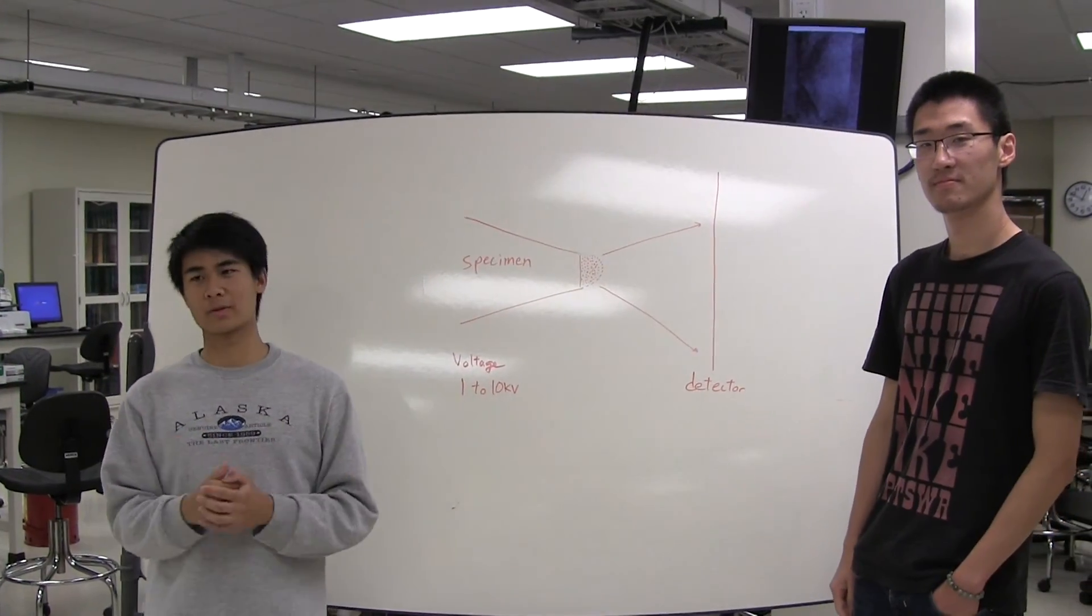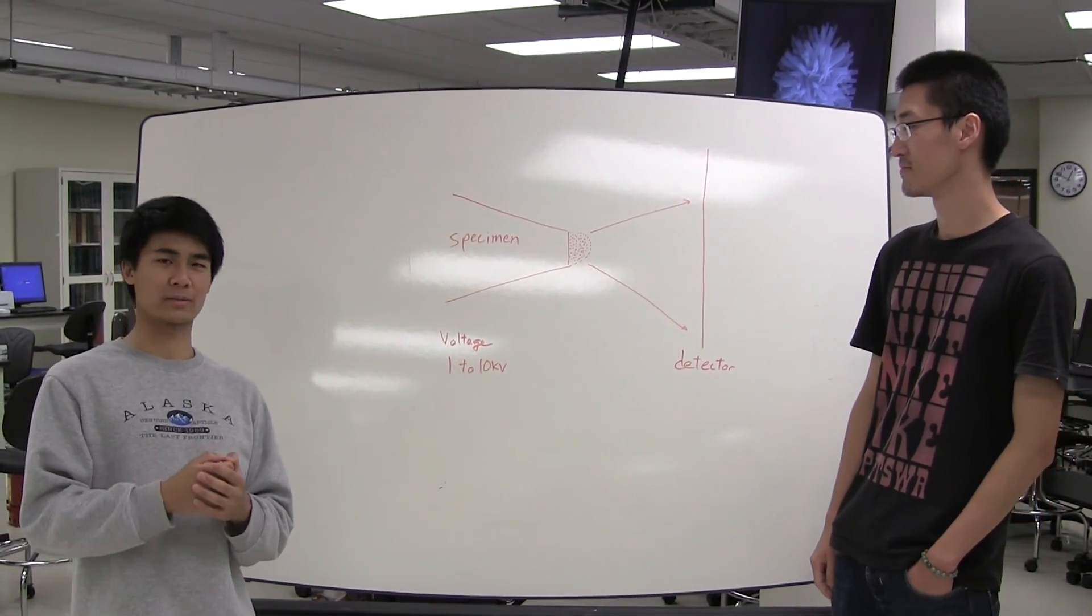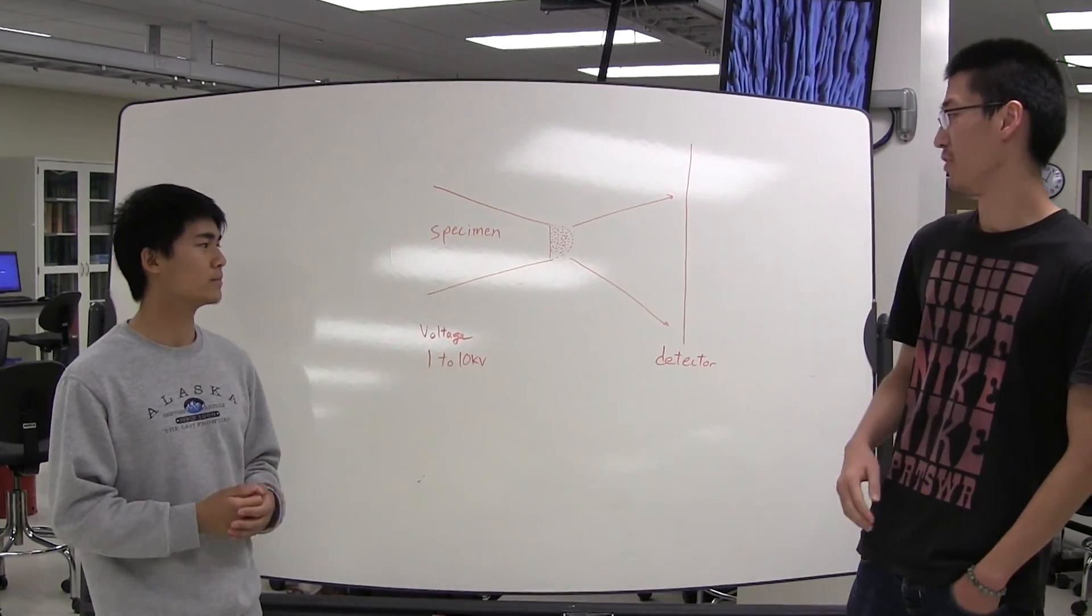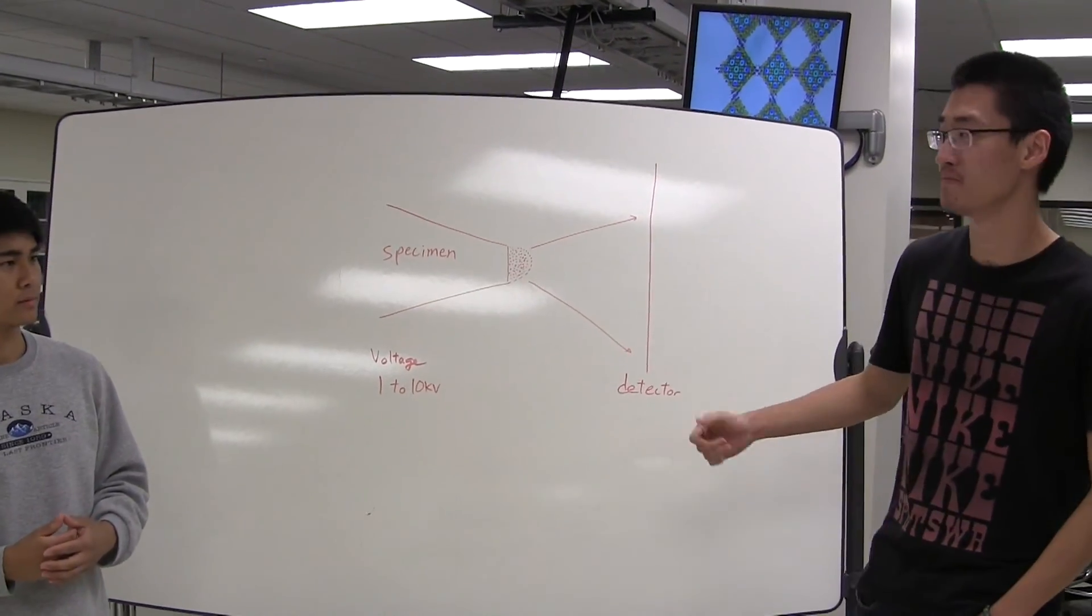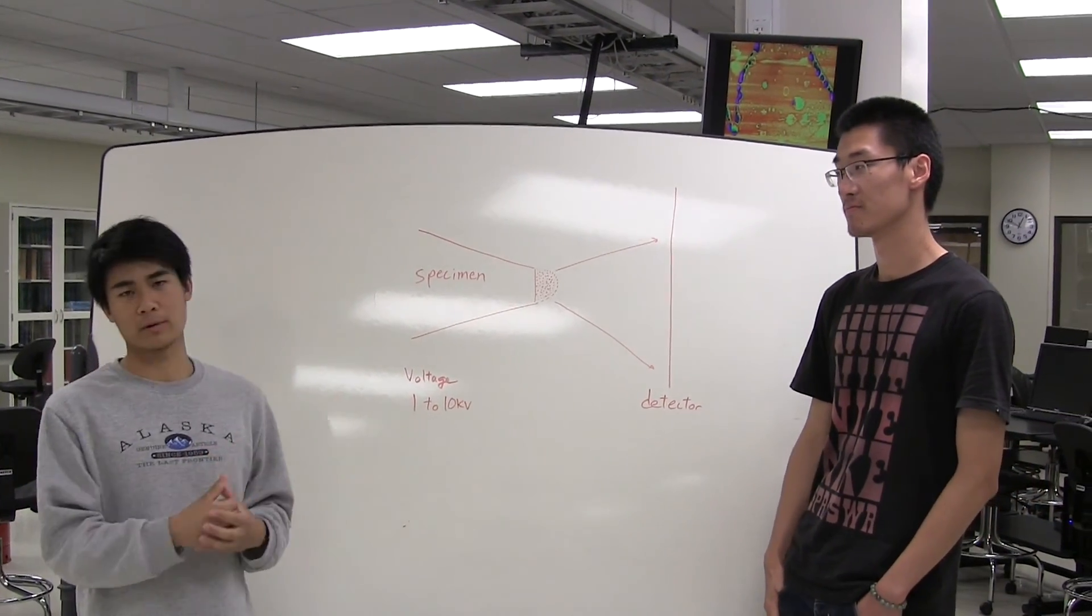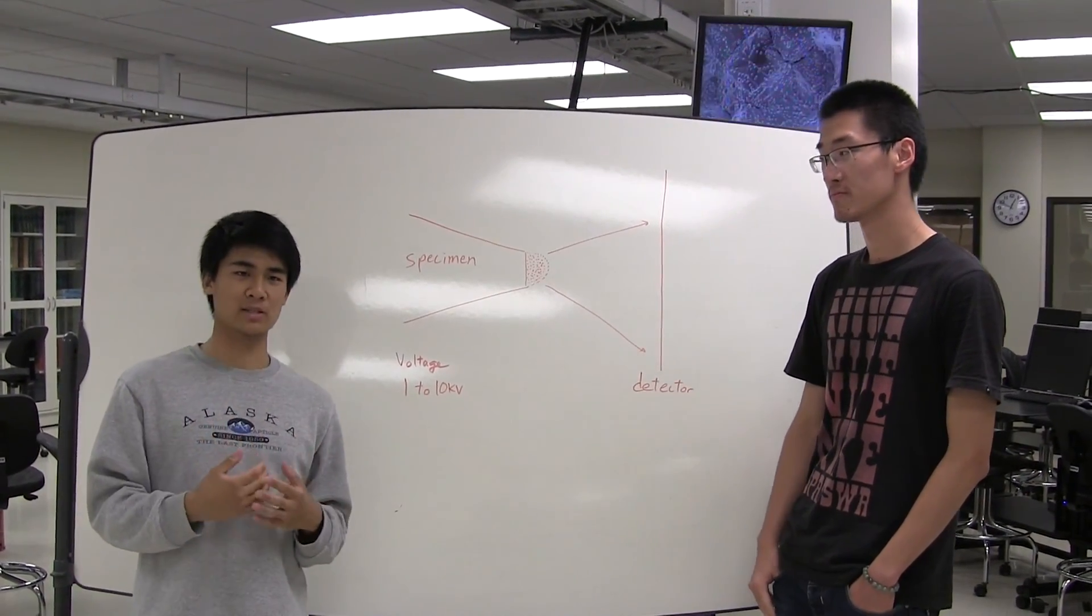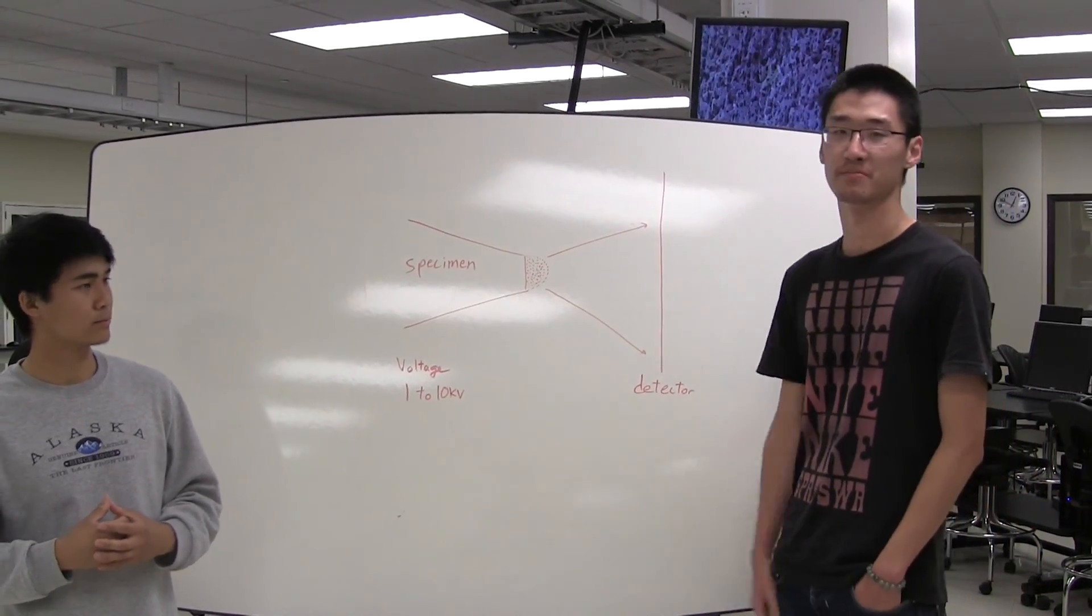Our group focuses on atom probe tomography. It's a characterization technique that uses the atom probe. The atom probe has two major parts, the specimen and the detector. The specimen can be made out of a variety of different materials. We focus primarily on metals. I'm working on a magnesium alloy. And I'm working on a computational model of tungsten specimen.